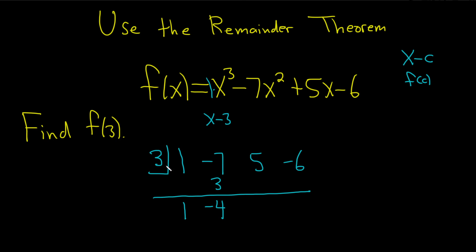Negative 4 times 3 is negative 12. We add these and we get negative 7. And then negative 7 times 3 is negative 21. And then we add these and we get negative 27.